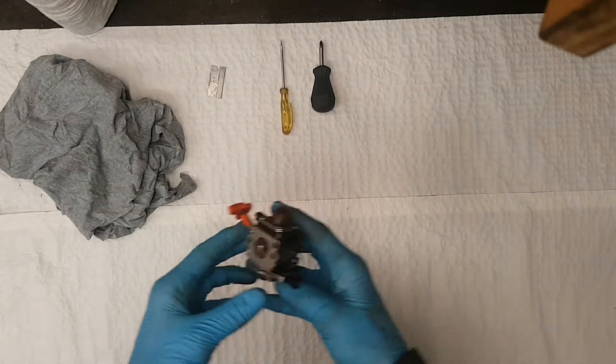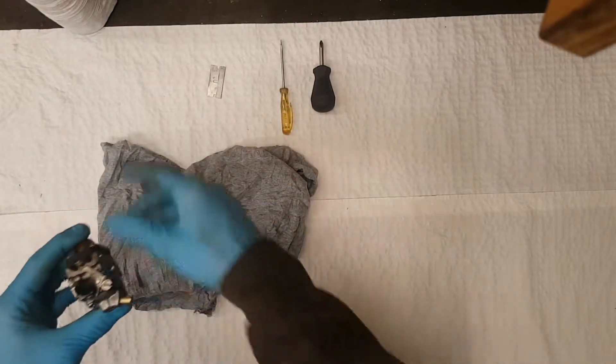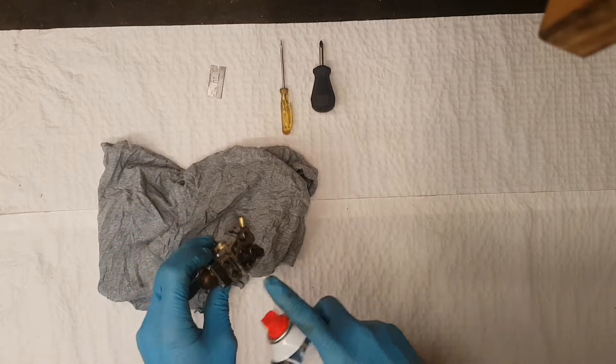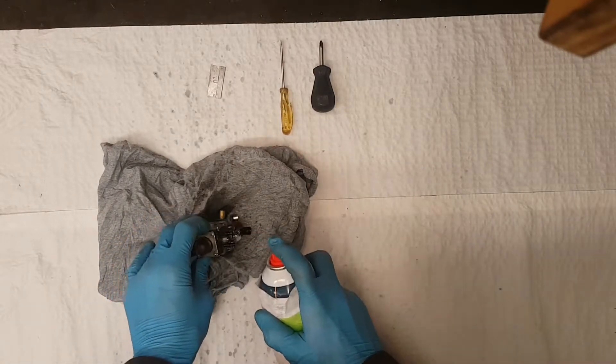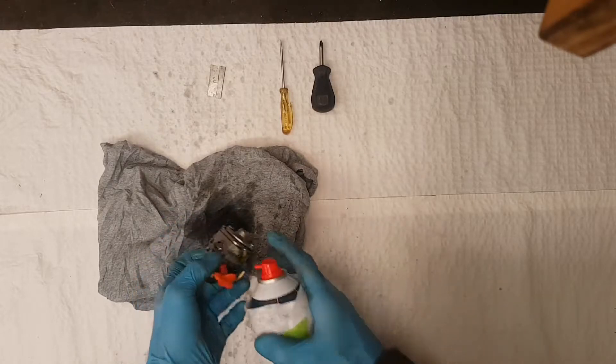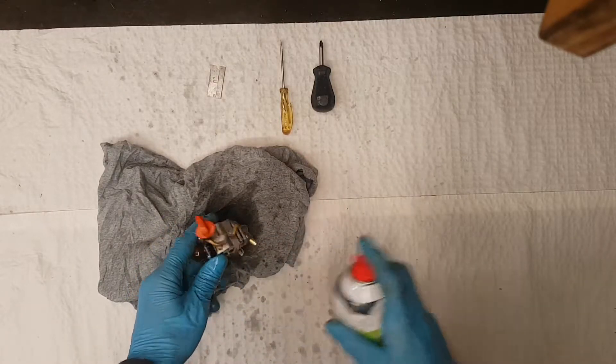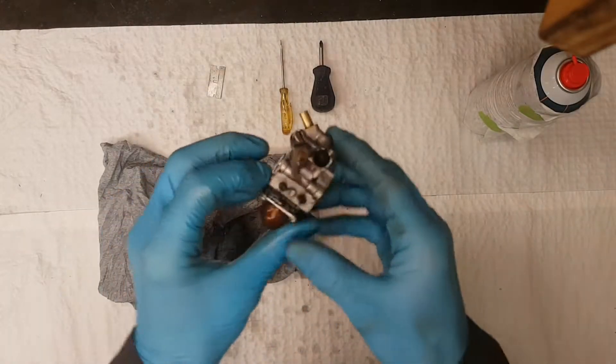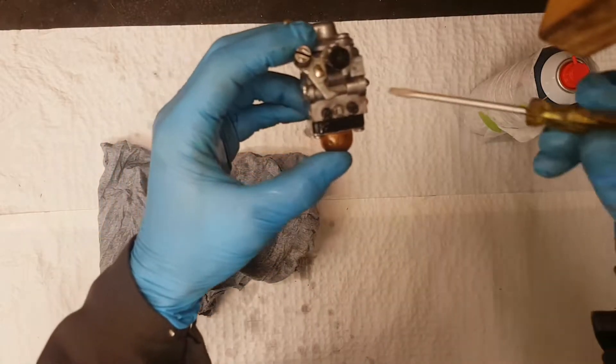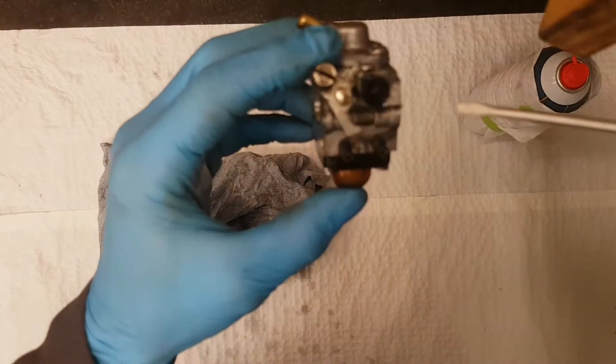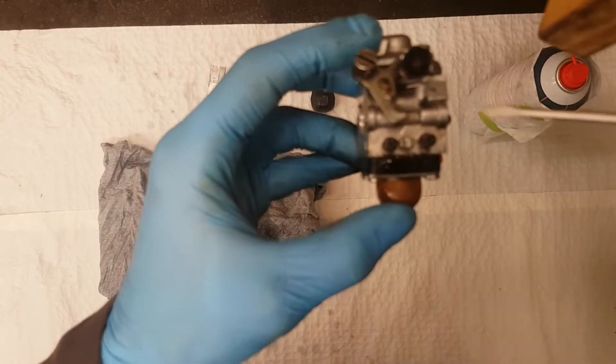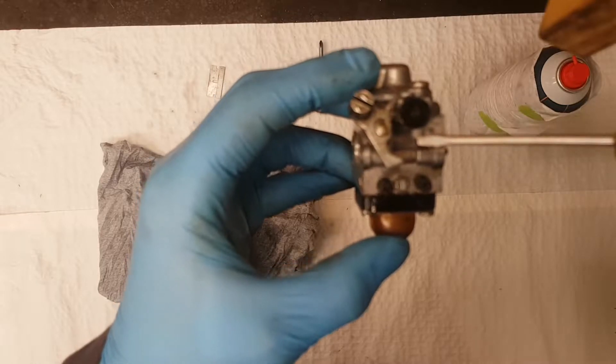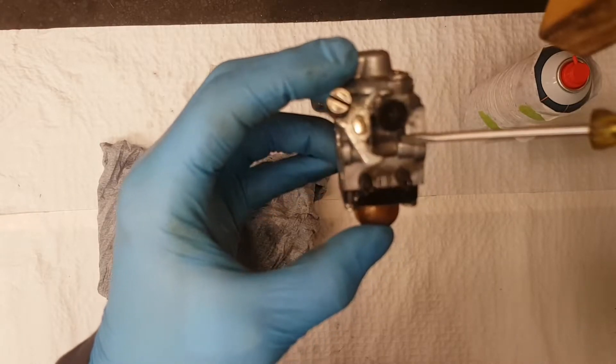For starters, I want to take the carburetor real quick and show you where you're going to find all of the numbers in order for you to possibly get a carburetor kit if you need one. I'm going to give it a quick spray. Of course, I'm wearing some gloves and some glasses. If we look right down here, you're going to see your numbers, which is a C1Q.